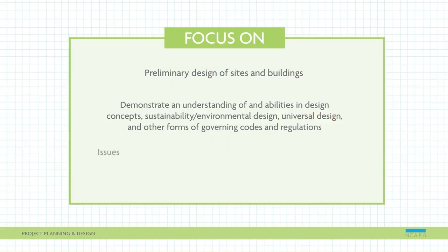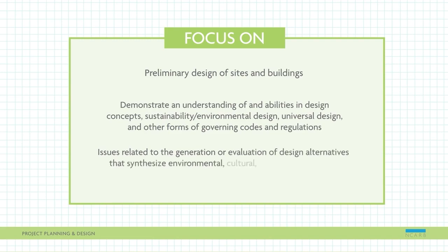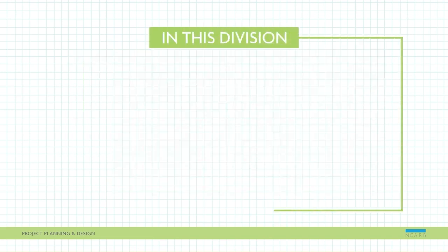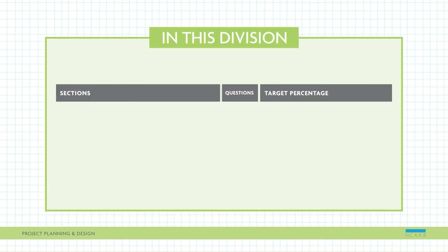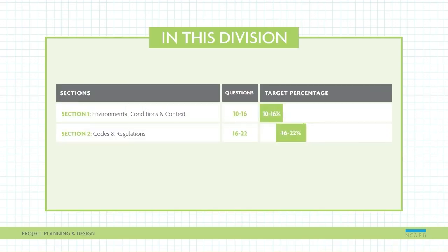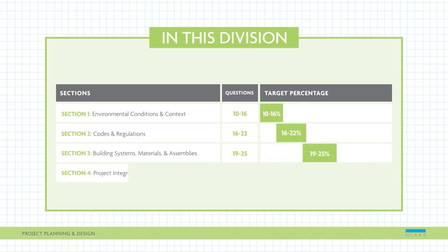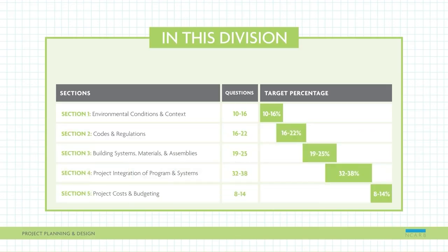You'll also explore issues related to the generation or evaluation of design alternatives that synthesize environmental, cultural, behavioral, technical, and economic issues. You'll have 4 hours and 5 minutes to answer 100 questions in this division, which includes sections on environmental conditions and contexts, codes and regulations, building systems, materials and assemblies, project integration of program and systems, project costs, and budgeting.